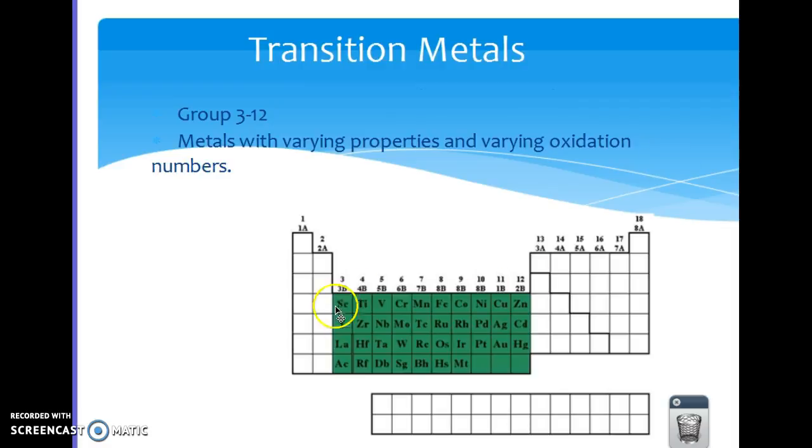Your transition metals are groups 3 through 12 in here. They're called transition metals because they like to change. Their oxidation numbers change, their properties change, but they are all definitely metals.